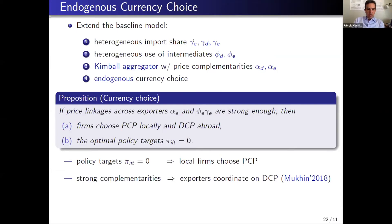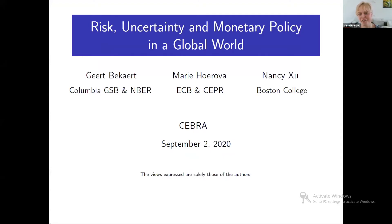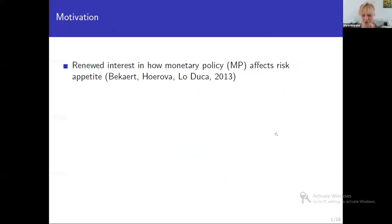I think we can go to the third paper. Let me thank you, Konstantin, for the presentation. The third presentation is by Maria from the European Central Bank. The title of the paper is Risk, Uncertainty and Monetary Policy in a Global World — this is joint work with Geert Bekaert from Columbia and Nancy Xu from Boston College. The views expressed are solely our own.